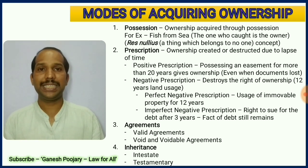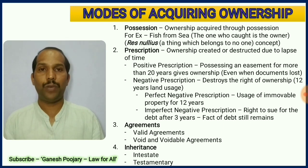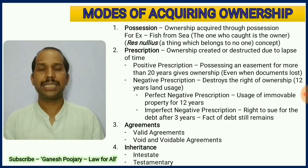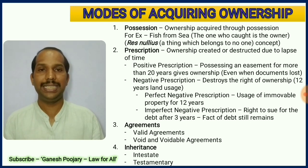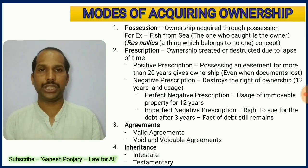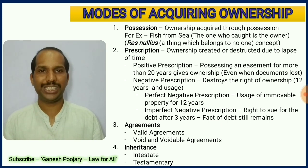The third mode is agreement. There are valid agreements available, and anything acquired through a valid agreement is a valid ownership. Void or voidable agreements, as you already know through contracts, do not create valid ownership. The last mode is inheritance, which can be in two ways: intestate and testamentary. Whatever way you get ownership through inheritance is also one of the modes of acquiring ownership.